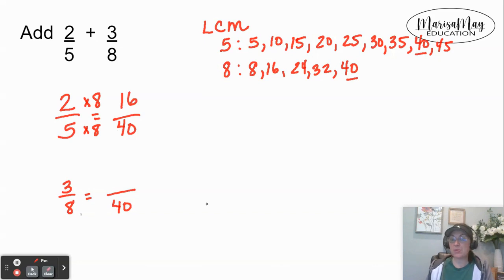Then we'll do the same with three eighths. Eight times five gives me 40, so we'll multiply the top by five. Three times five gives me 15.